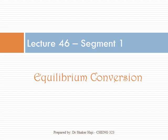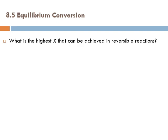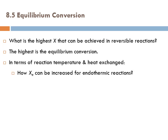Let's talk about equilibrium conversion — this adds flavor to reactions. What is the highest conversion that can be achieved in reversible reactions? Obviously, that's the equilibrium conversion, and we'll discuss it in terms of reaction temperature and heat exchanged.